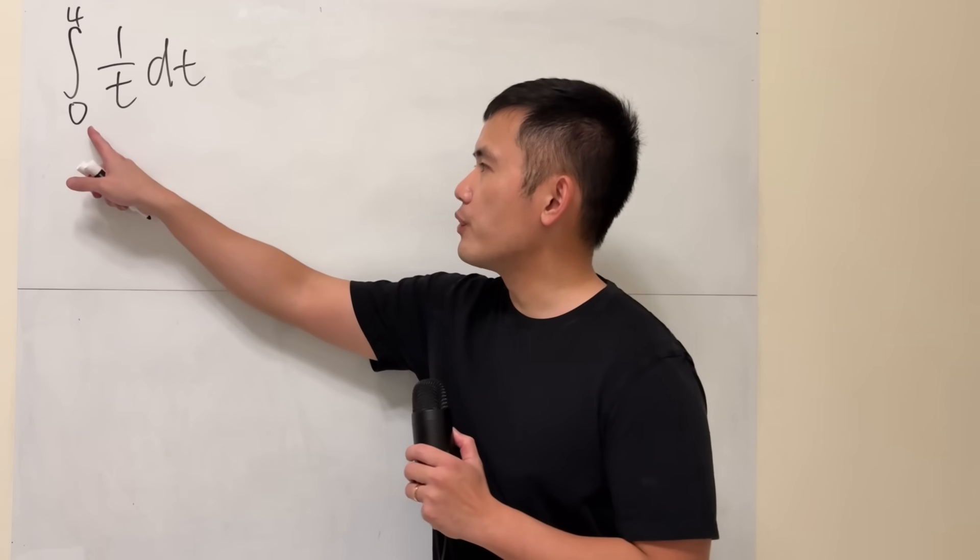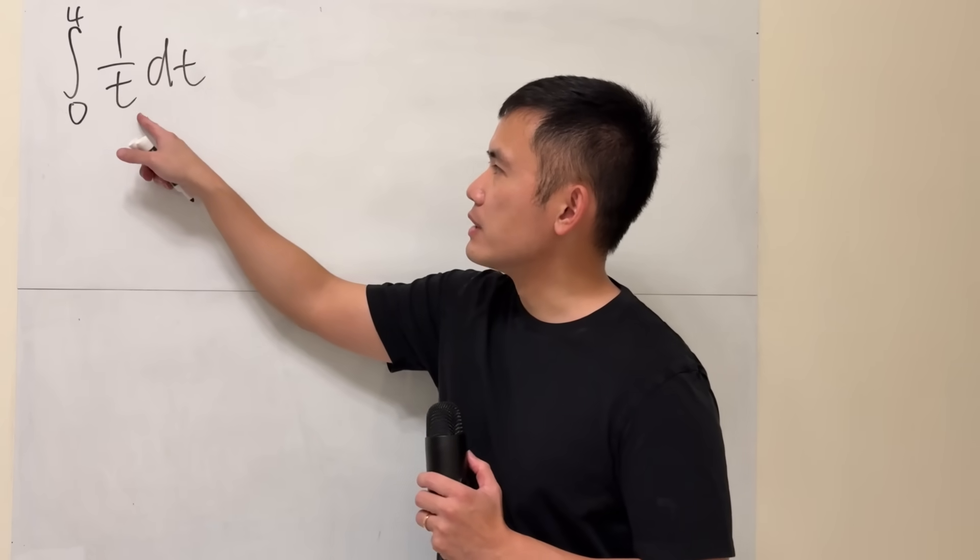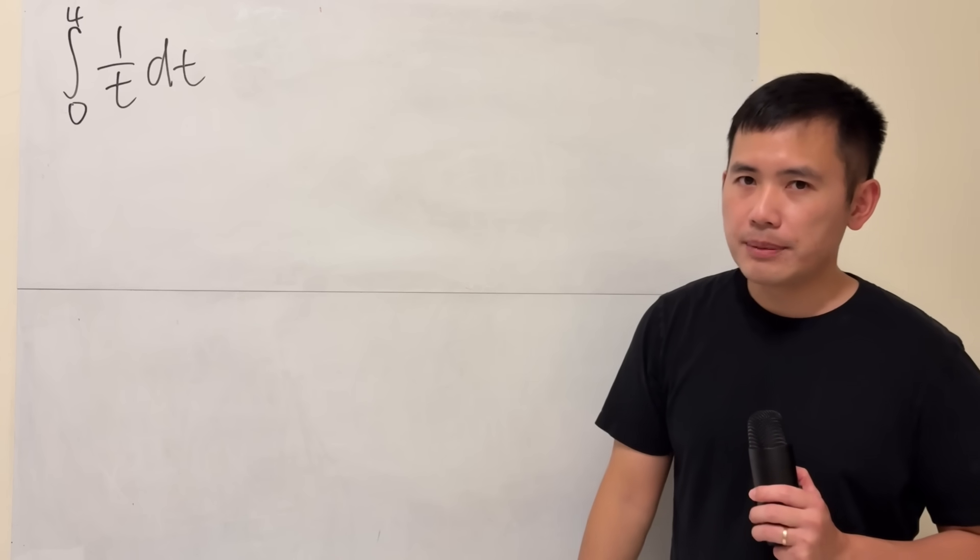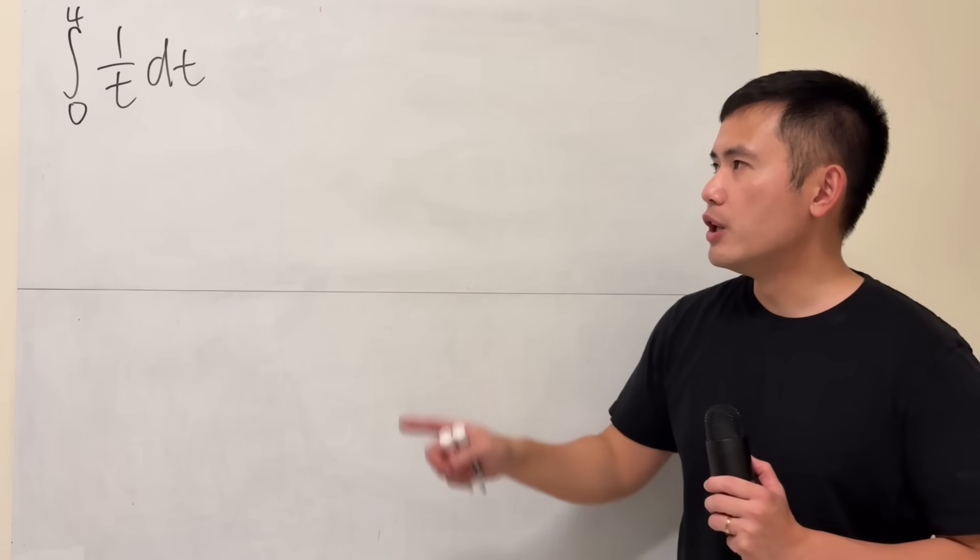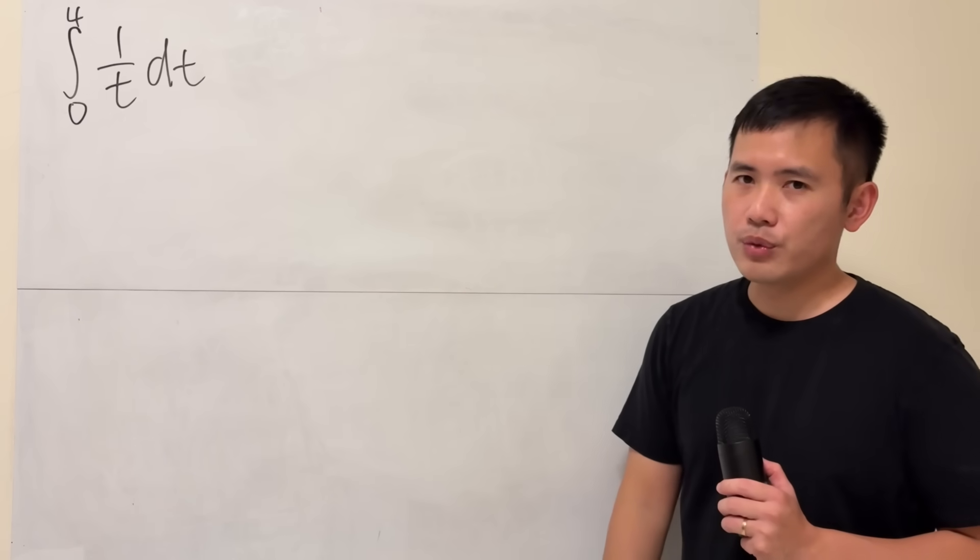Right here we have the integral going from 0 to 4 of 1 over t dt. And we're supposed to use the FTC, technically the second part of it, to evaluate this definite integral.